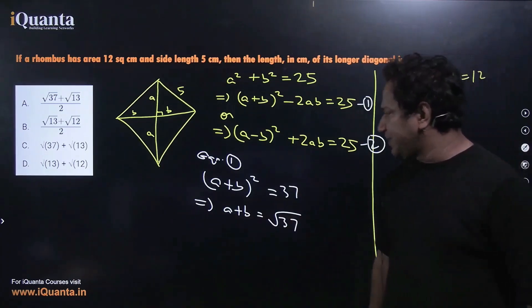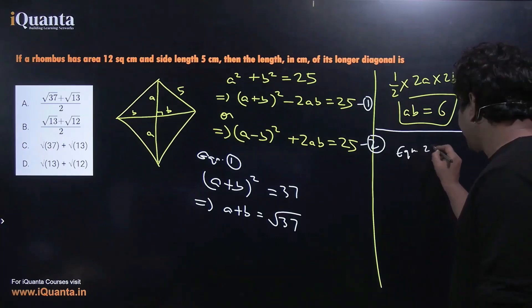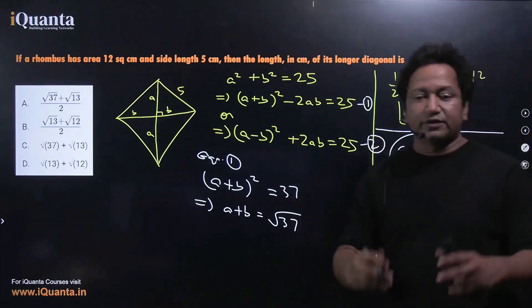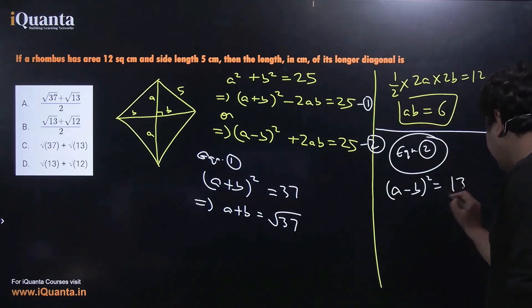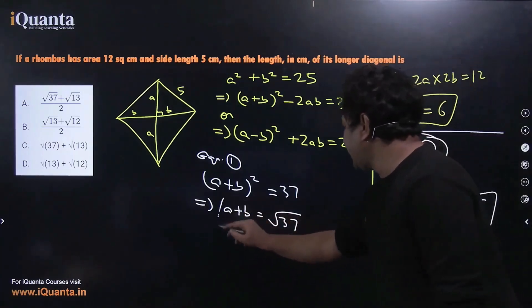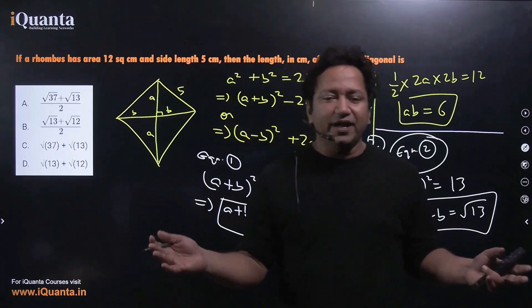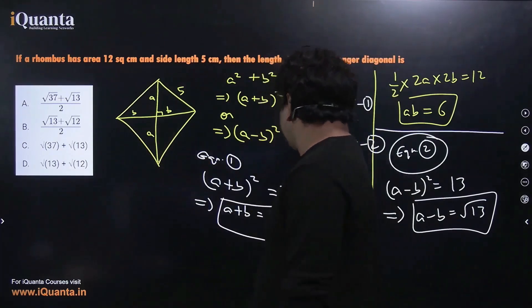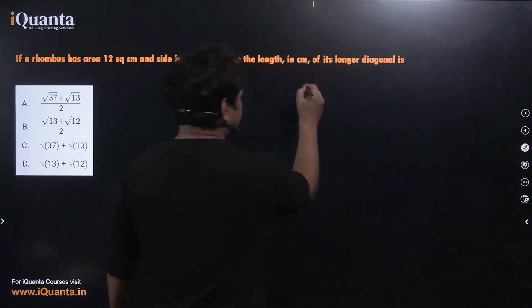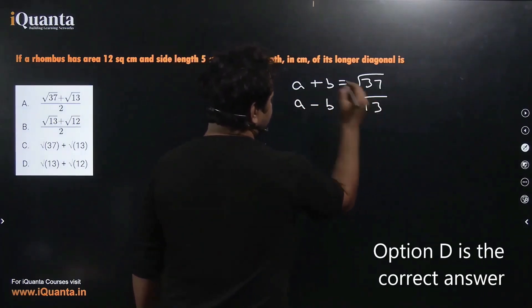Similarly, putting ab = 6 into equation 2: (a - b)² = 25 - 2×6 = 25 - 12 = 13, so (a - b) = √13. Now we have two equations: a + b = √37 and a - b = √13. Solving this system will give us the individual values of a and b, and whichever is larger corresponds to the longer diagonal.